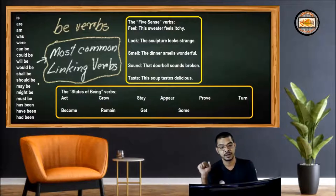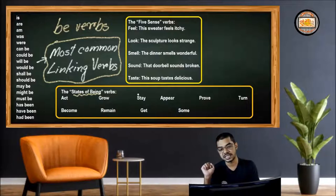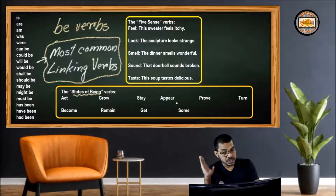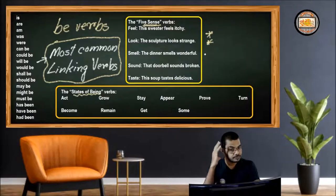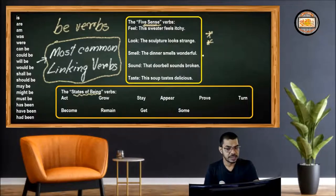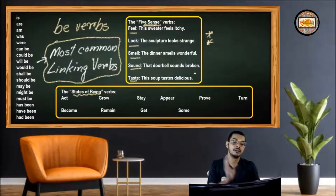The next category is state of being verbs — very important to remember. These include: act, become, grow, remain, stay, get, appear, prove, turn, and others. Then comes the five senses category, also very important. Whatever we perceive through the five senses — those verbs are also linking verbs: feel, look, smell, sound, taste. So here you have the full list of verbs we use as linking verbs.